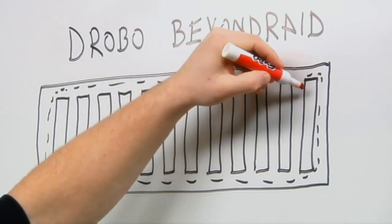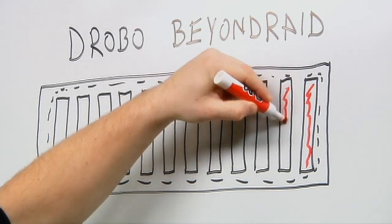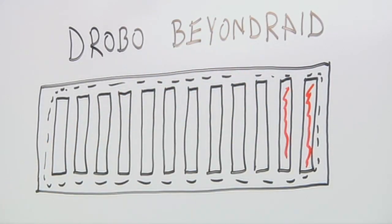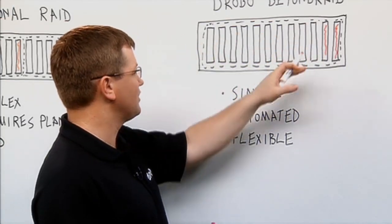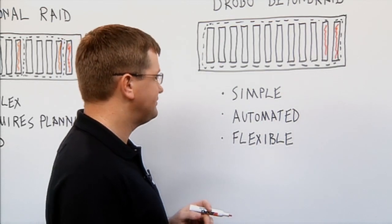So you make that decision. Let's say I want two simultaneous drive failures, so it will use two drives for parity protection. And then you have, if this is a 12 drive Drobo, you have 10 drives left for capacity.